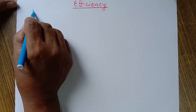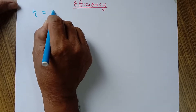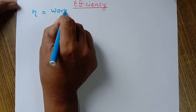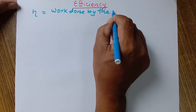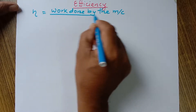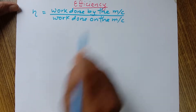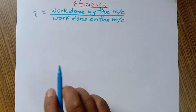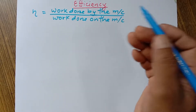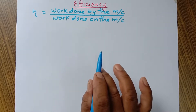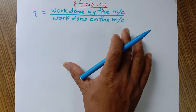Efficiency, which is shortly denoted by the eta sign, is equal to work done by the machine divided by work done on the machine. This is one method of expressing the efficiency of a simple machine.